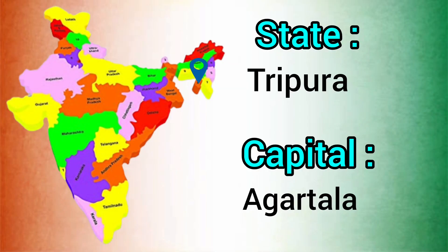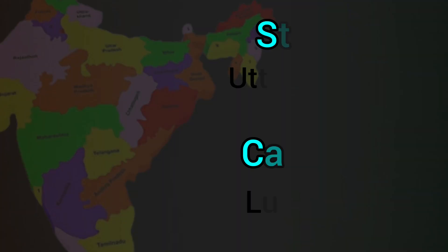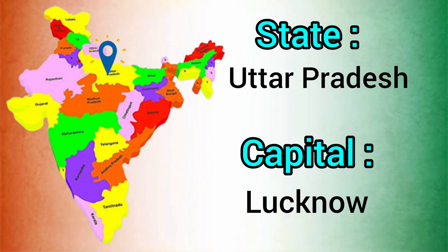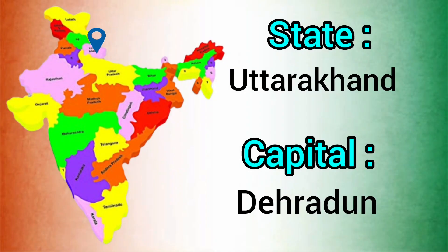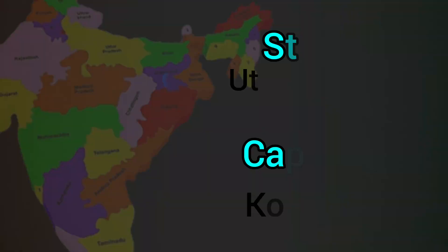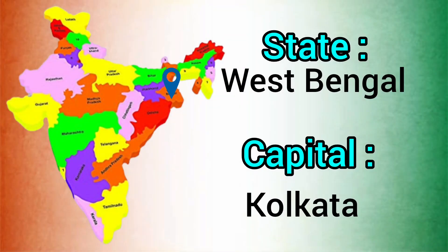State: Tripura. Capital: Agartala. State: Uttar Pradesh. Capital: Lucknow. State: Uttarakhand. Capital: Dehradun. State: West Bengal. Capital: Kolkata.